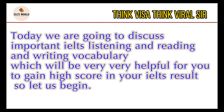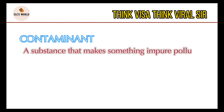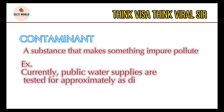Let us begin. The first word is 'contaminant.' What is the meaning of the word contaminant? Something or a substance that makes something impure or pollutes something — that is called a contaminant. For example: currently, public water supplies are tested for approximately 80 different contaminants.